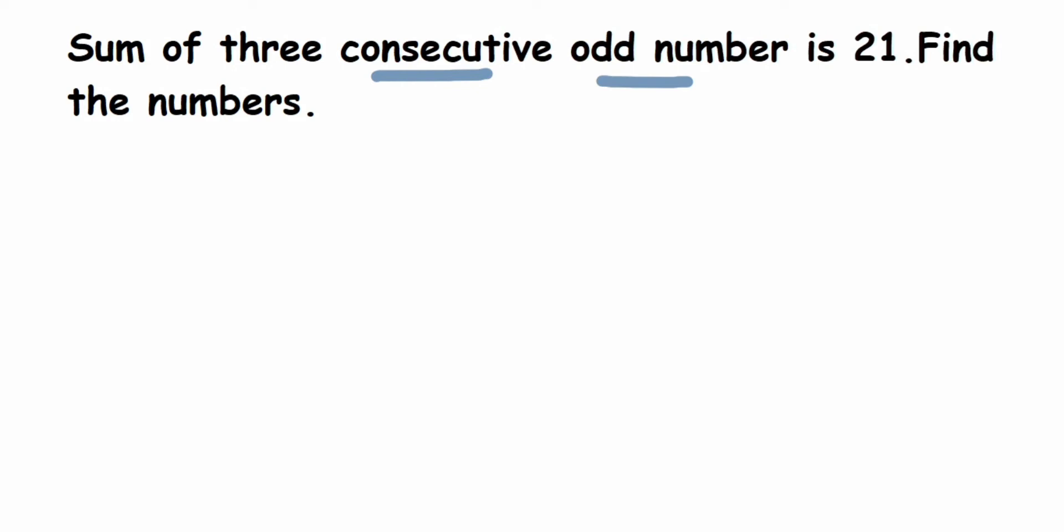We don't know what these three numbers are, so we're going to assume them. Let me take an example to explain. Suppose the three consecutive numbers are one, three, five, then seven, and keep on going.